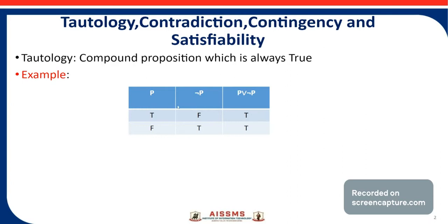So see here: the value of P is true, negation of P is false, then P or negation P is true. Next, the value of P is false and the value of negation P is true. So this truth table contains only true values, so it is called a tautology.